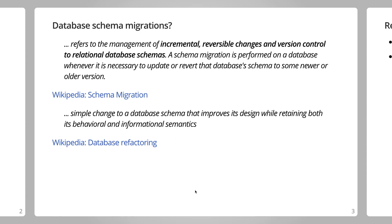So what are database schema migrations? These two quotes are taken from Wikipedia. Database schema migrations refers to the management of incremental, reversible changes and version control to relational database schemas. A schema migration is performed on a database whenever it is necessary to update or revert the database's schema to some newer or older version. The whole point is to have a history of the changes applied — so if we're creating a new table, adding or removing a column, or changing a column type, all of that should be stored in a version control system so team members can review and track changes.